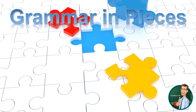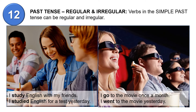Hello friends, this is teacher JV. Let us study grammar in pieces. Today we are studying past tense. Past tense has two forms: one regular, one irregular. Usually we use 'ed' for regular verbs, and for irregular verbs there is no specific fixed form. So verbs in the simple past tense can be regular and irregular.